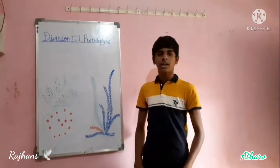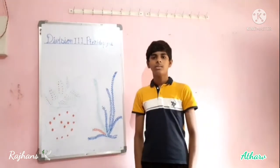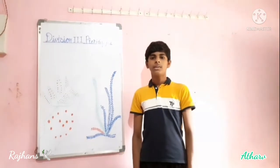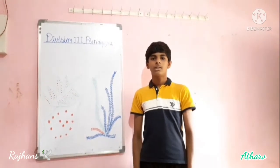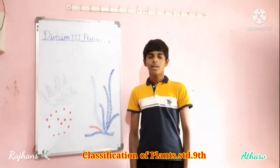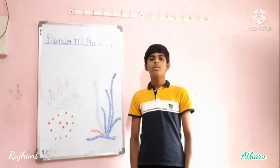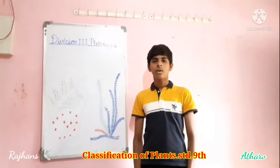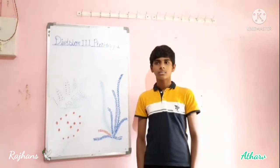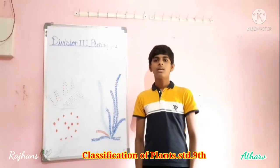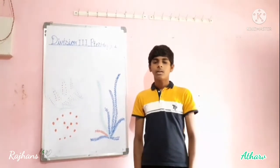Region 3: Pteridophyta. Plants from this group are well-developed. They have roots, stem, and leaves, and separate tissue for conduction of food and water, but they do not bear flowers or fruit. They are reproduced with the help of spores from along the back of the leaf. For example, ferns like Nephrolepis.